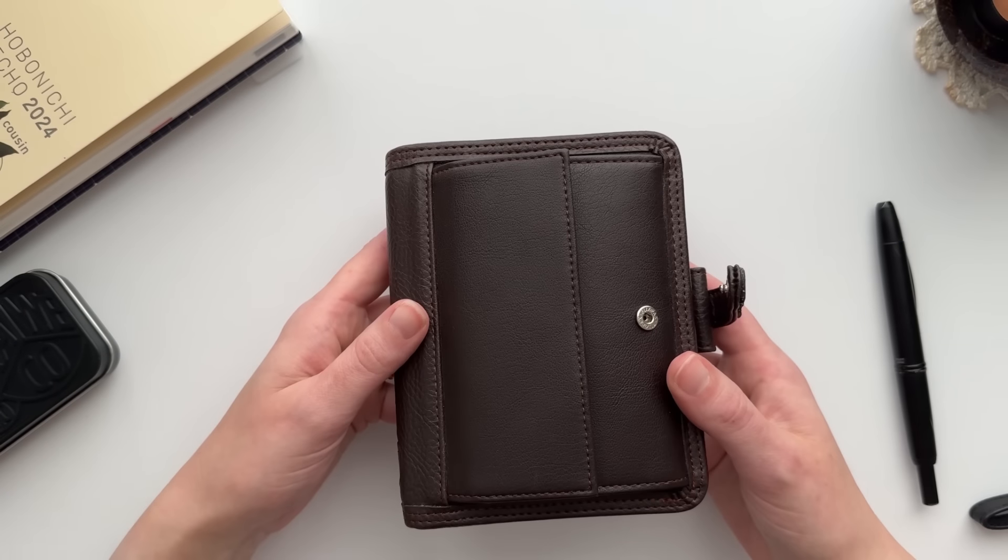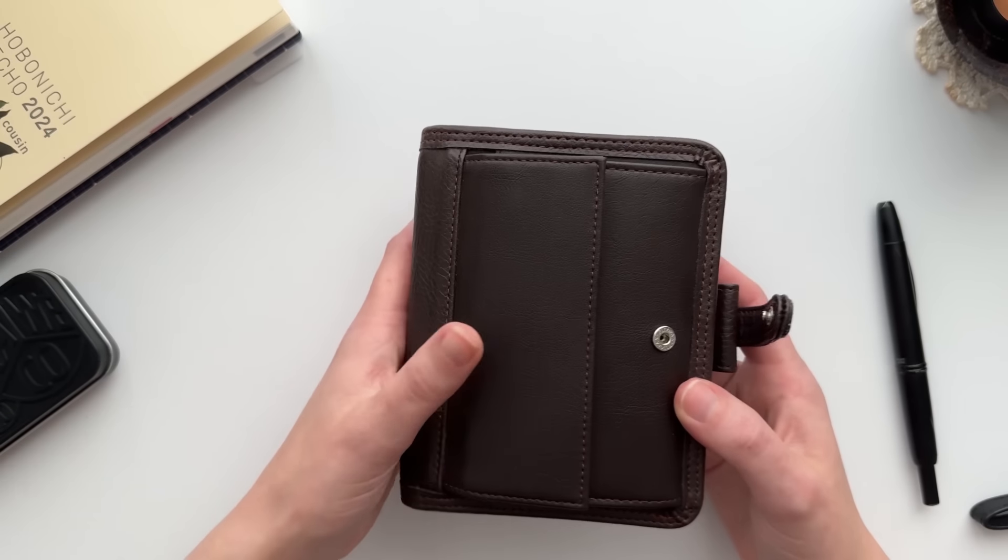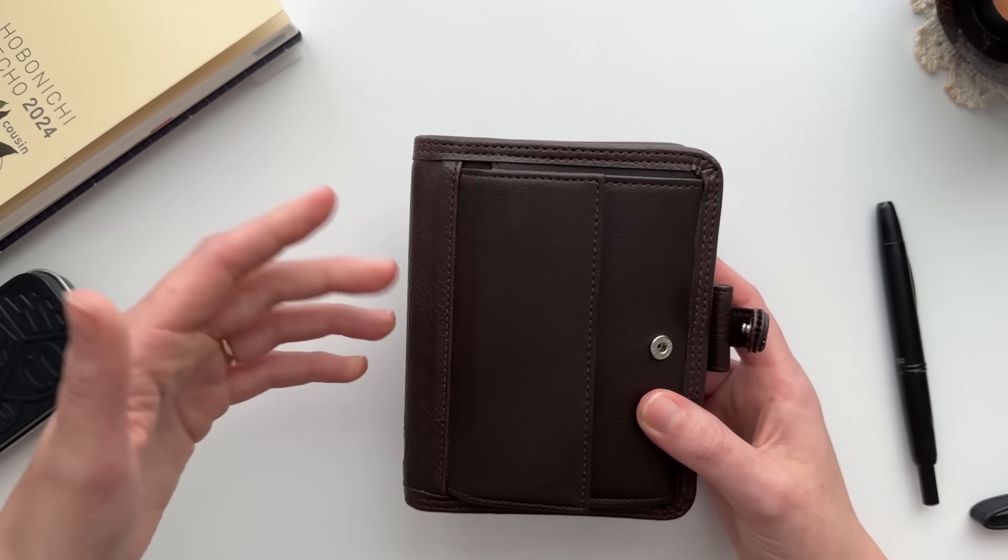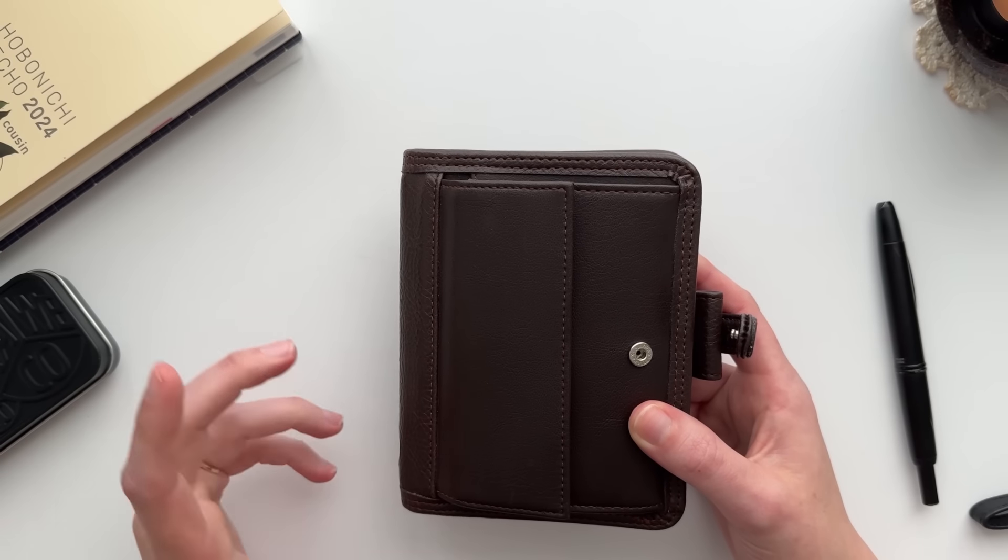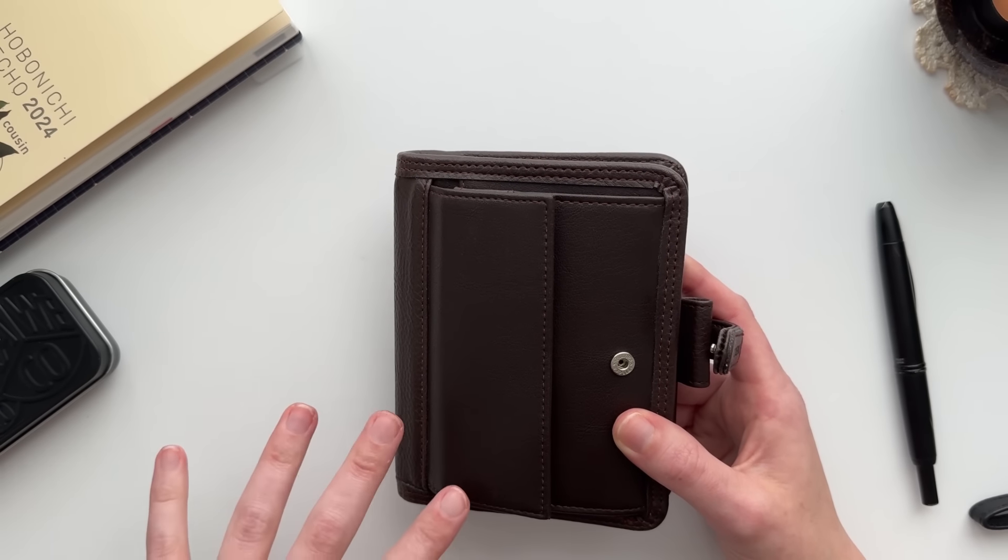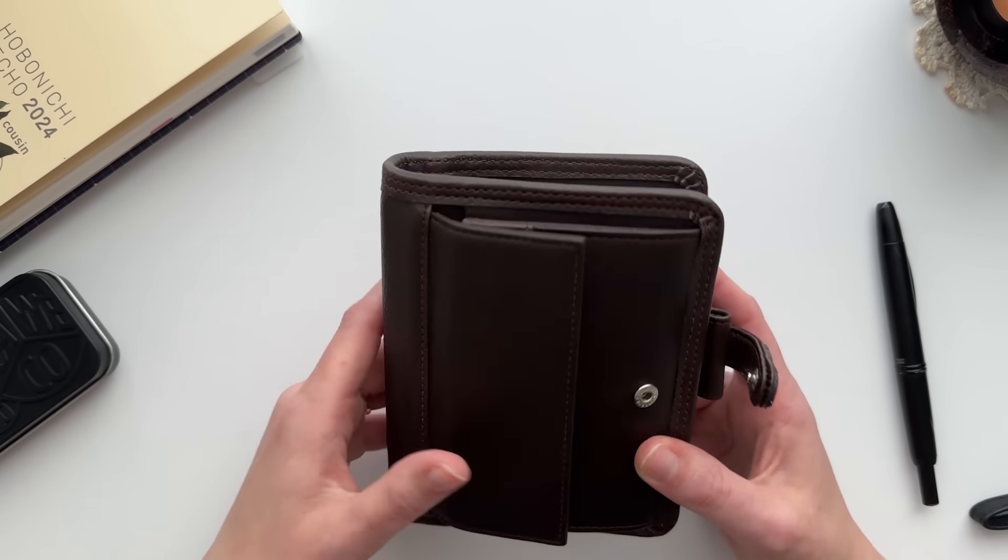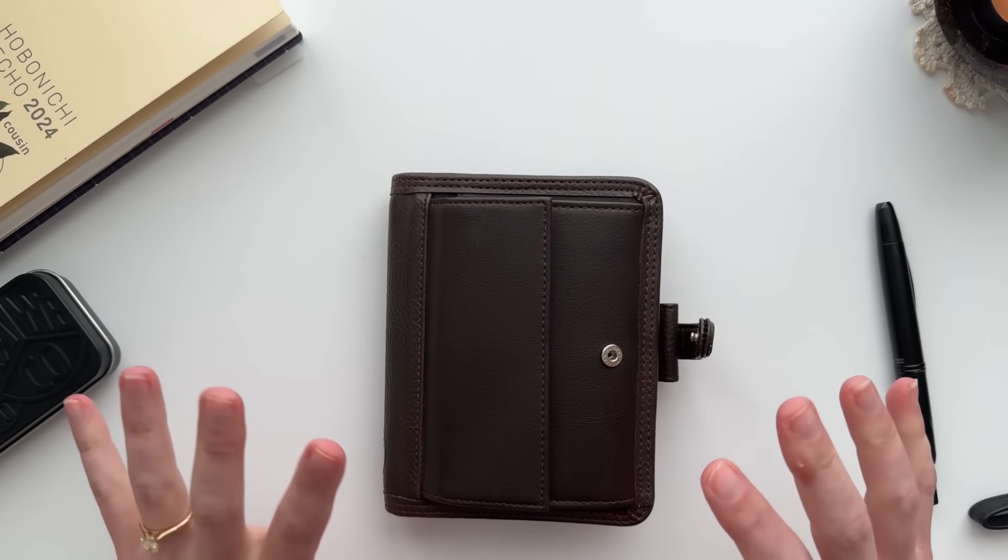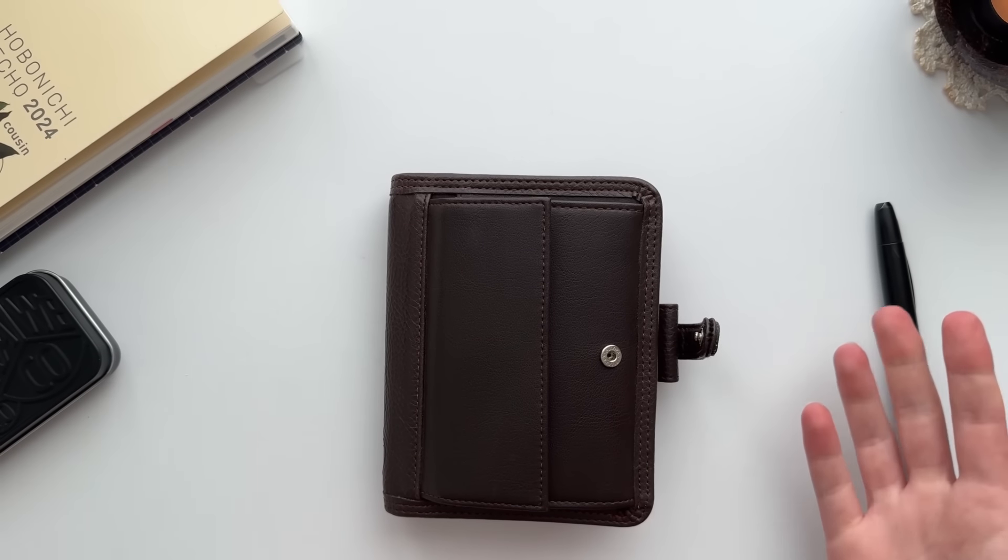My planner is the Filofax Ranger in pocket size. It's a brown cover, non-leather. I picked this up in January and found mine on eBay. They unfortunately no longer make this model - I think they stopped in 2004, but sometimes you'll see them pop up on eBay or buy-sell-trade groups. I am using this as a planner-wallet combo.